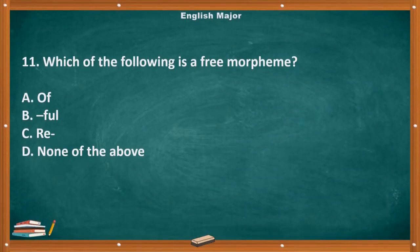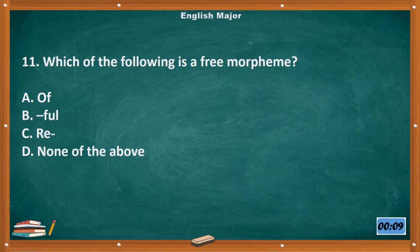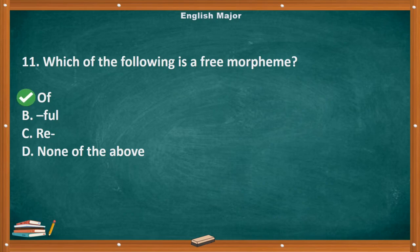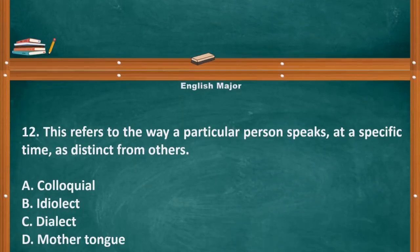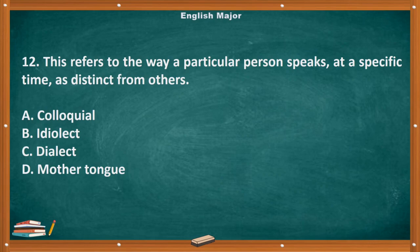Question number 11. Which of the following is a free morpheme? A. Of. B. Full. C. Re-. D. None of the above. The correct answer is letter A, Of.